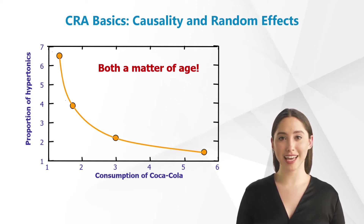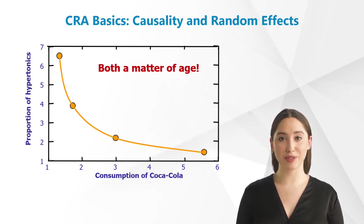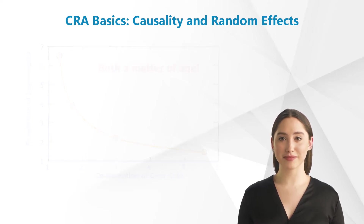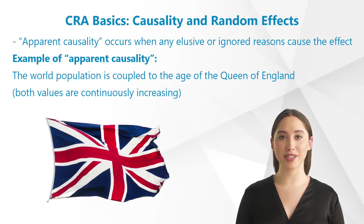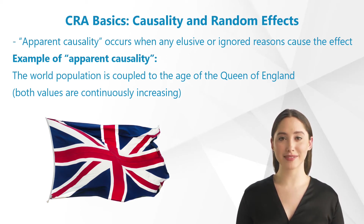This statement is not tenable because both factors are correlated to age. Elderly people drink less Coca-Cola, but they do suffer more often from high blood pressure, and vice versa. This phenomenon is known as apparent causality, which occurs when elusive or ignored reasons cause the observed effect, such as a therapy's success.